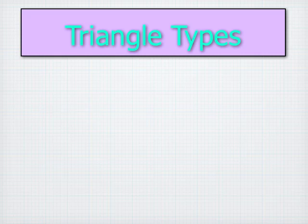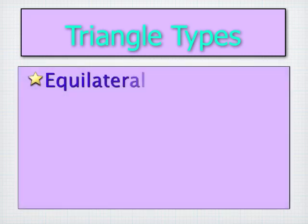Hi, this is Mr. Mitchell, and these are triangle types. Triangles can be categorized into two categories: one based on the sides of a triangle, and the other based on the angles of a triangle. So let's see how we can categorize them into six different types of triangles.